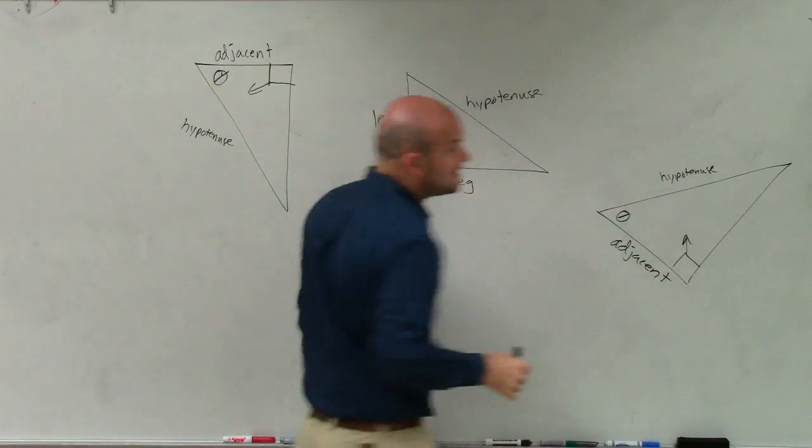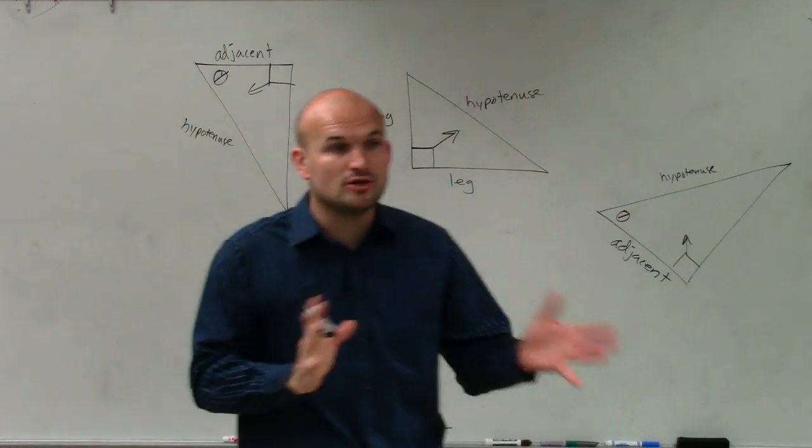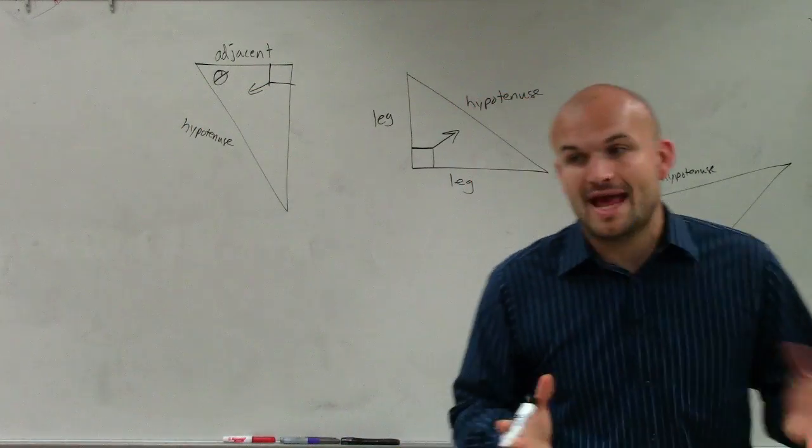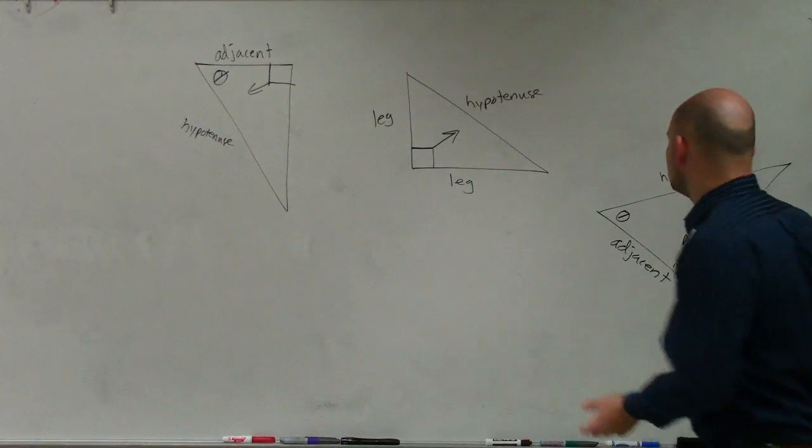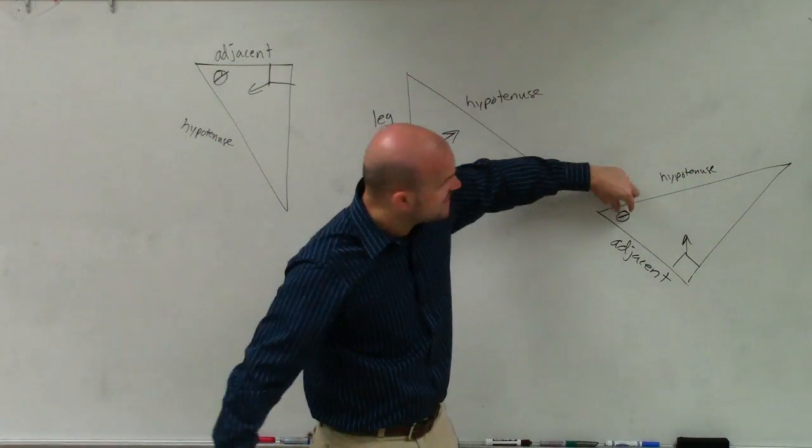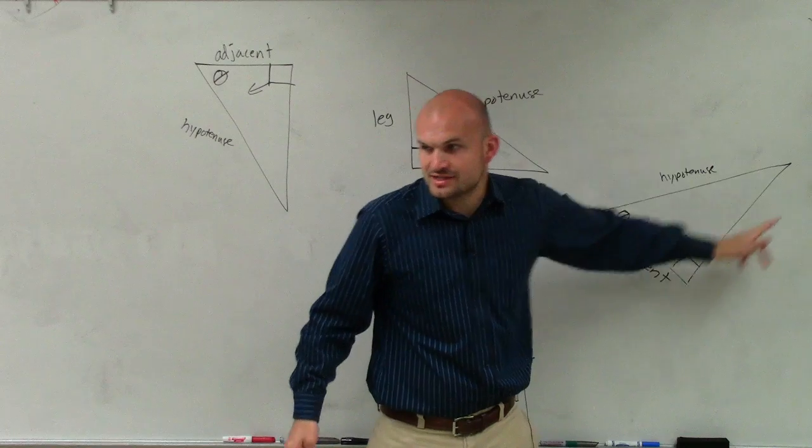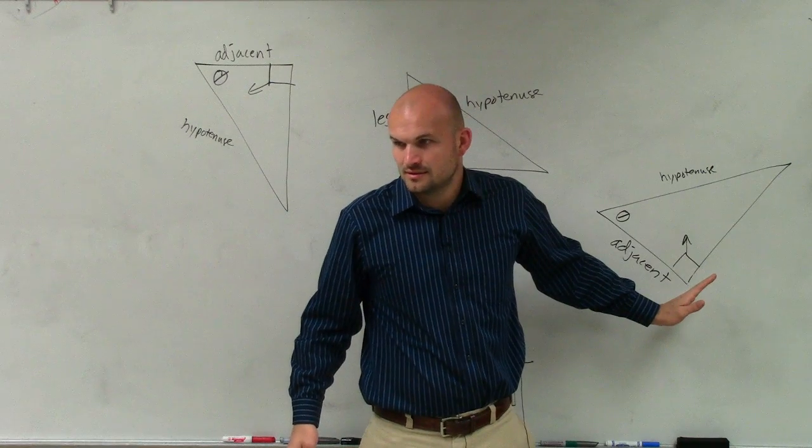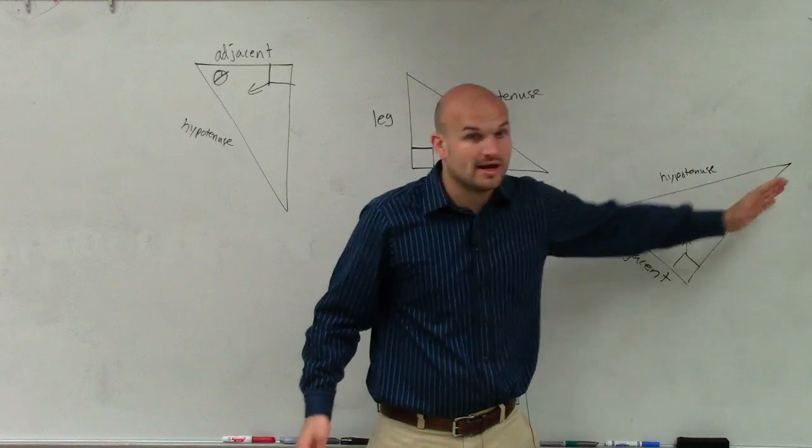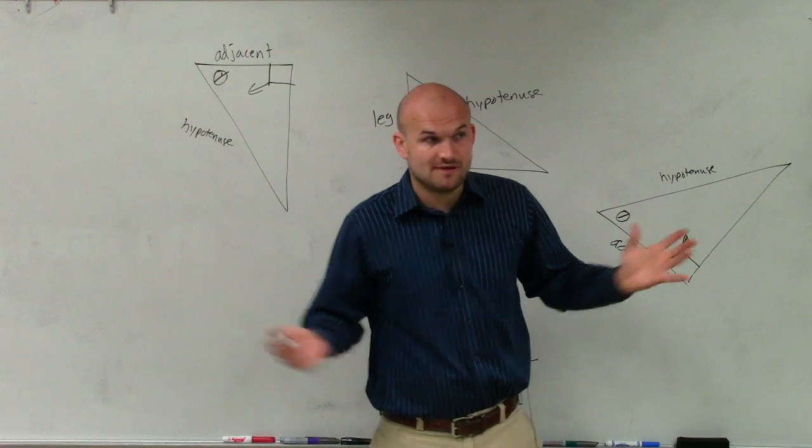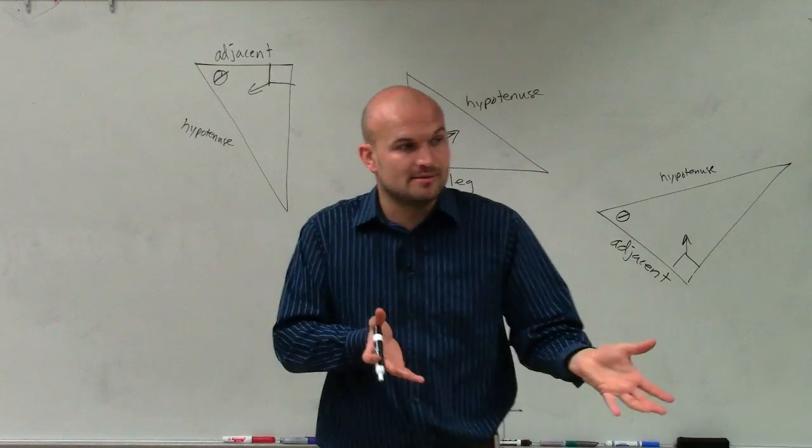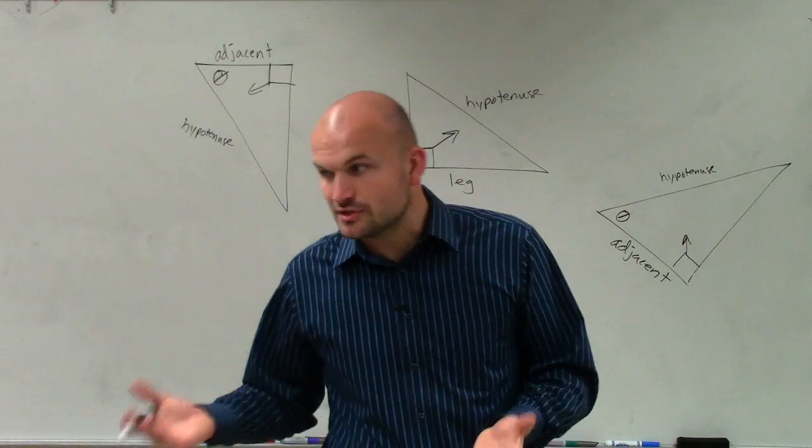And what I want you guys to understand is it all changes. It all depends on where the angle is. Because if I change the angle up there, now this is the adjacent. Do you guys see that? So it all depends on where the angle is. If you move the angle, your adjacent side moves. But your hypotenuse is still your hypotenuse.